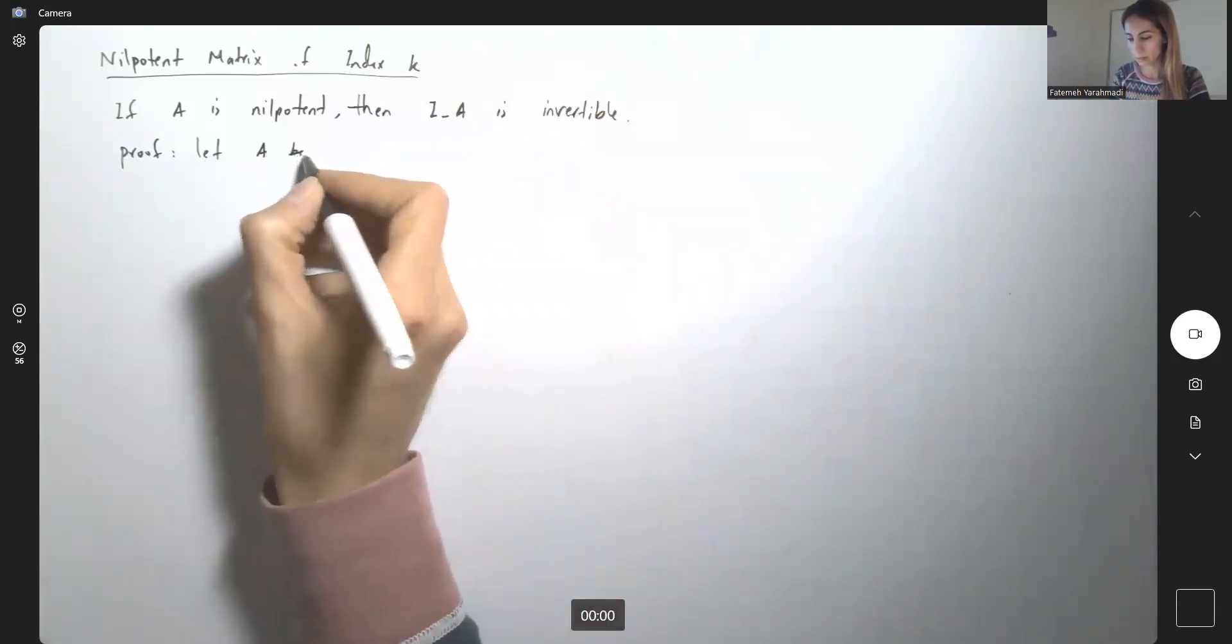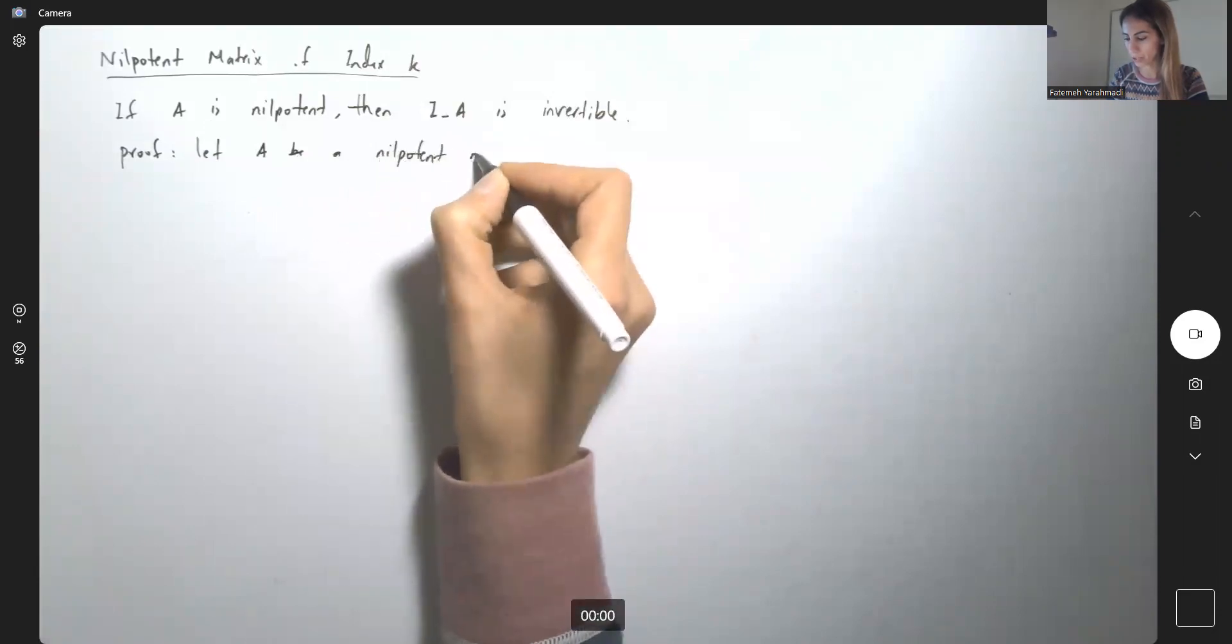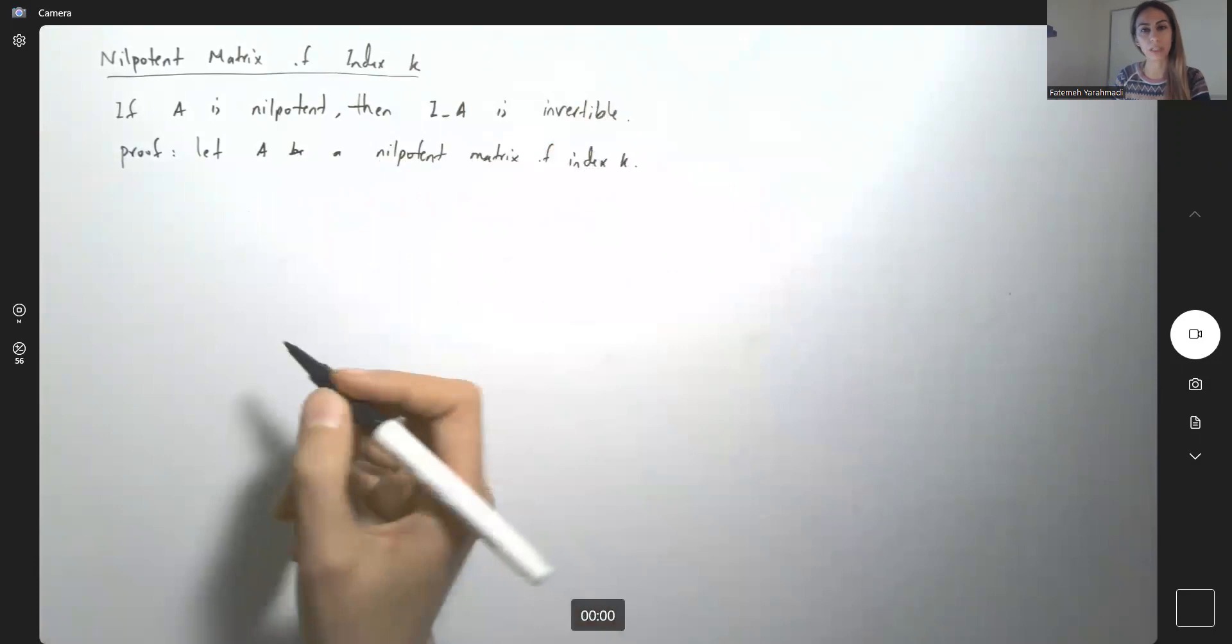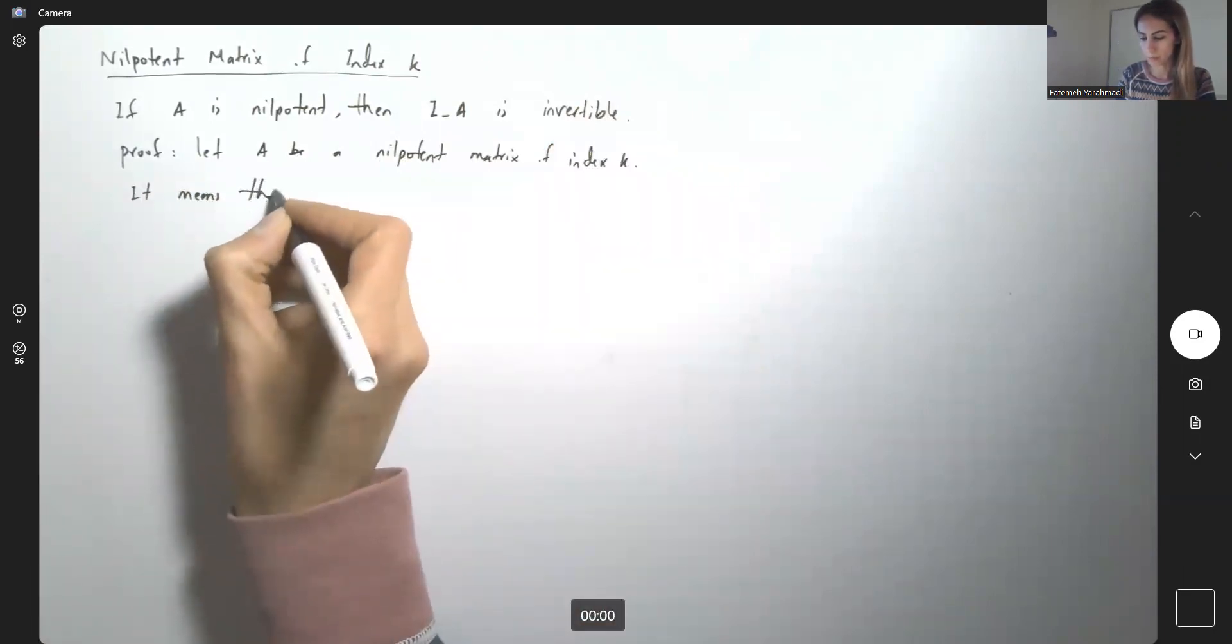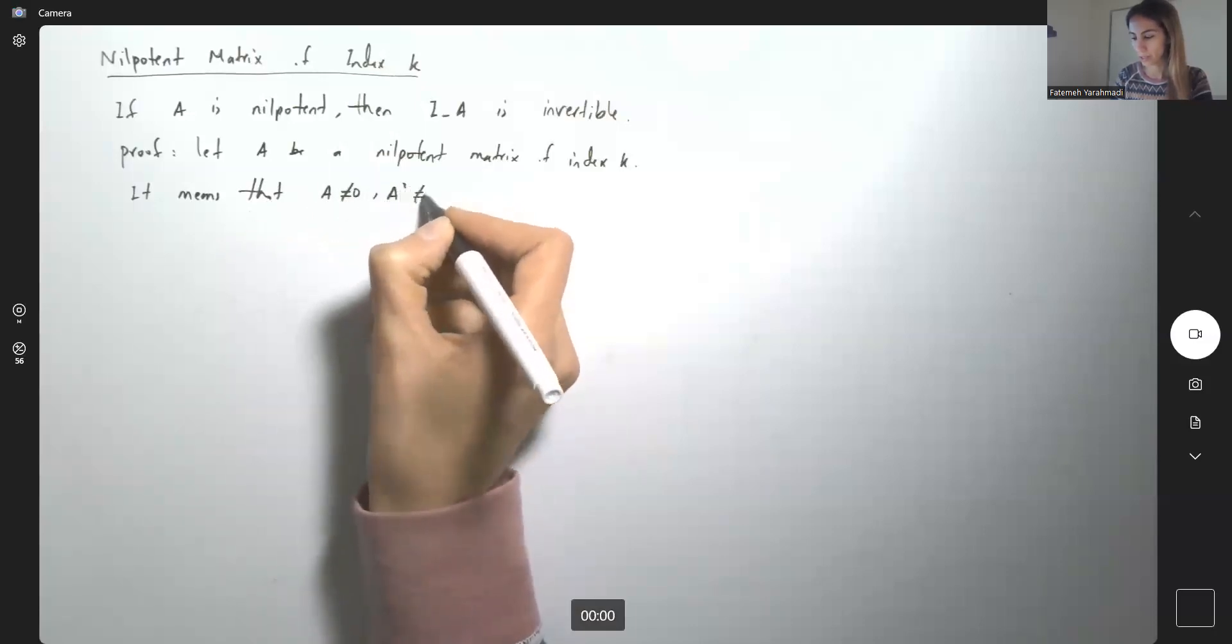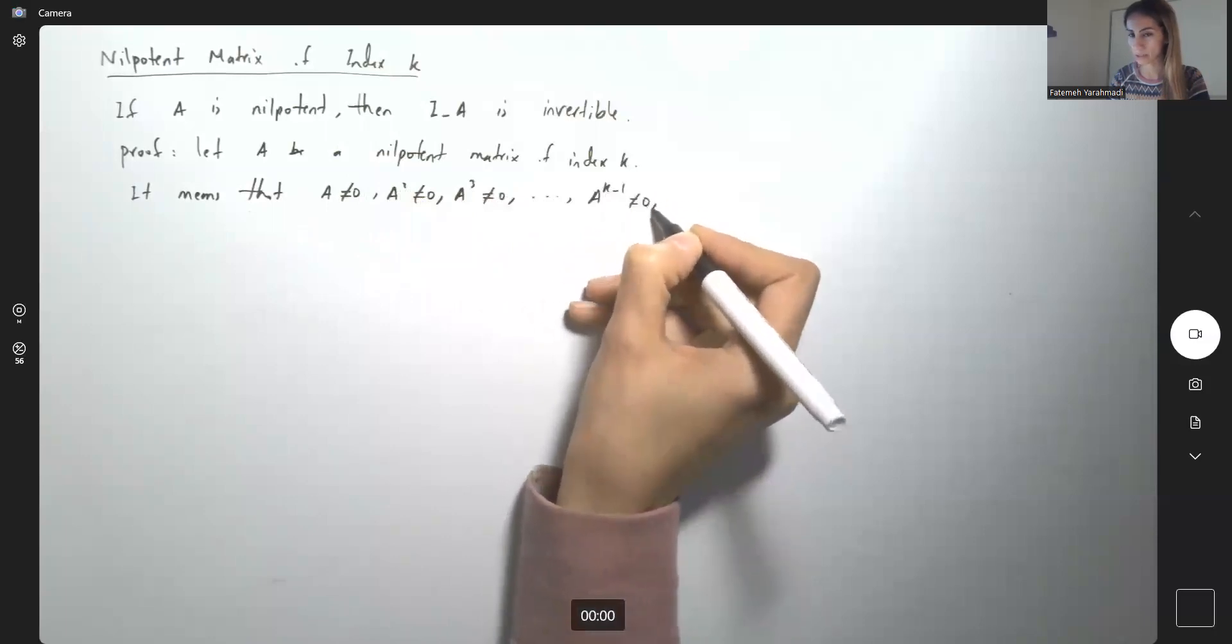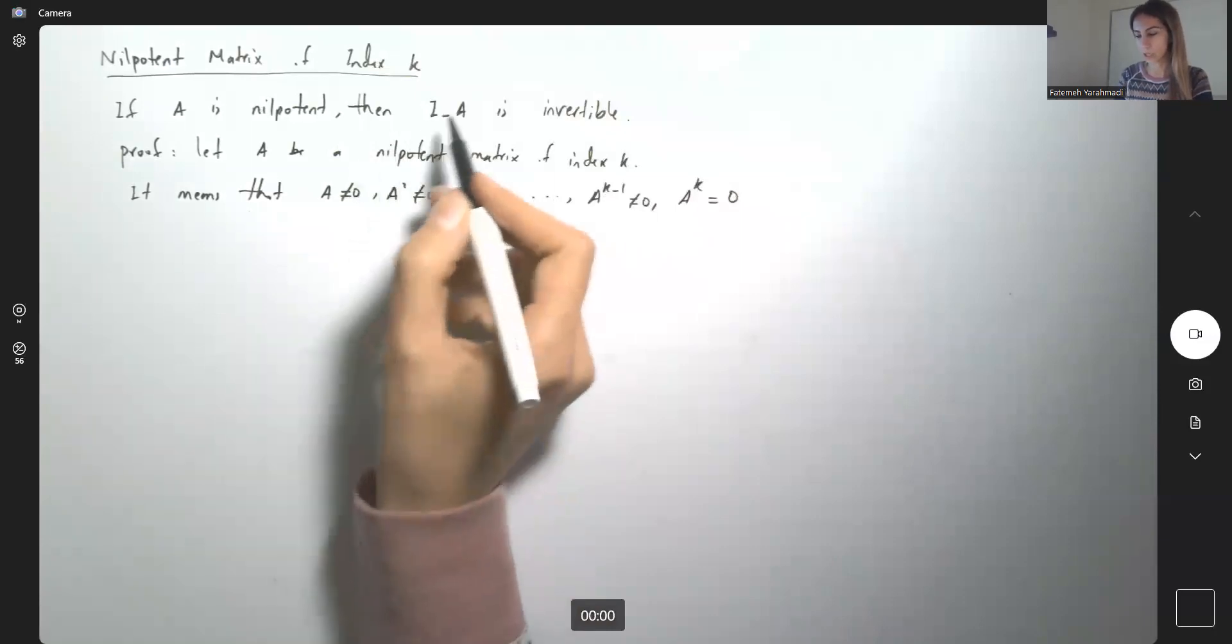Let A be a nilpotent matrix of index K. What's the meaning of that? It means that A itself is non-zero, A squared is not zero, A to the third is not zero, and A to power K minus 1 is not zero, but if you raise A to power K, it becomes zero.